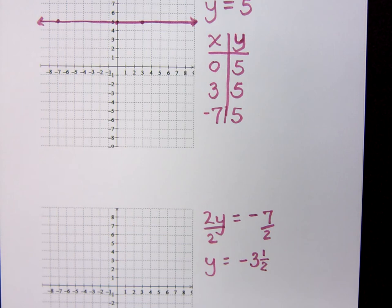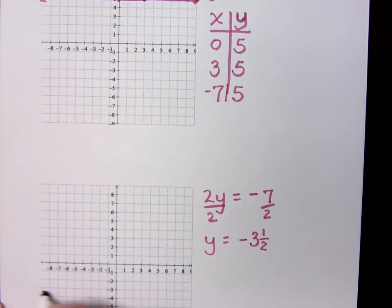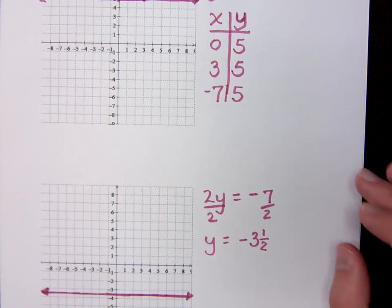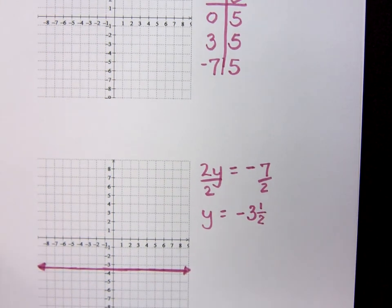So when I graph this, it's going to be just like this top one here. It's going to be a horizontal line, but in this case, it's going to be going through negative 3 and a half. So it's going to be this guy right here. What do you guys think? Is that awesome? You can't even contain yourself, right? I can see it in your eyes. You're doing your very best to stay seated. That's good.